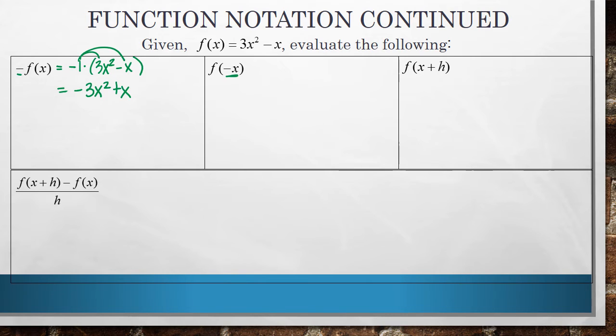Now this is asking us to input negative x everywhere I see an x in our function. So I'm going to go up to our function. Anywhere I see an x, I'm going to replace it with this negative x. So I get 3 times negative x quantity squared minus a negative x. Negative x squared is negative x times negative x, which gives us positive x squared. Minus a negative is a positive, or the other way you can look at it is the opposite of a negative value is a positive value.